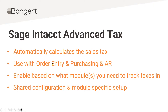You can use advanced sales tax in order entry and purchasing, and you can enable it based on what and where you need to track it. Maybe you need to charge sales tax for accounts receivable customer invoices but not on the purchasing side — or vice versa, maybe all your projects are exempt but you need to track sales use tax on the purchasing side. You can turn these on and off based on your specific needs.